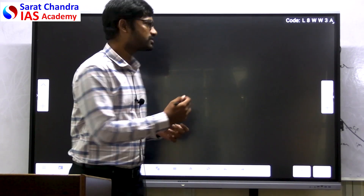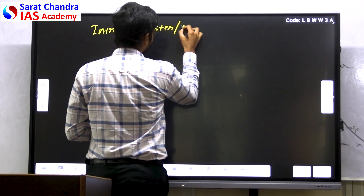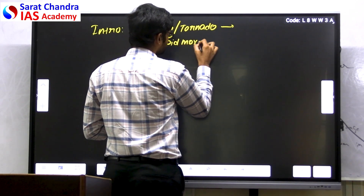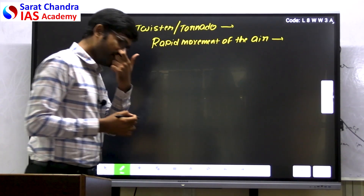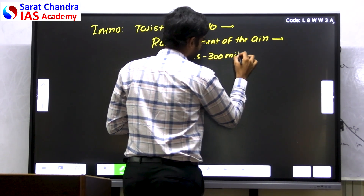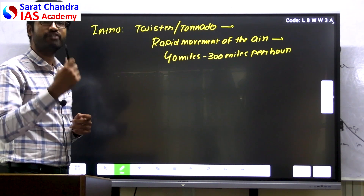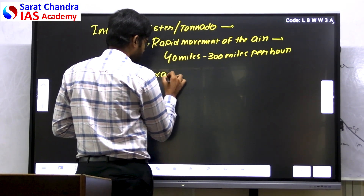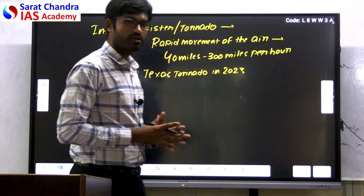You can start with the introduction. A twister or tornado is the rapid movement of a column of air. Generally, the intensity varies from 40 miles to 300 miles per hour — the air column moves in a spiraling fashion at that speed. For example, the Texas tornado in 2023. This is how we can introduce the term twister.